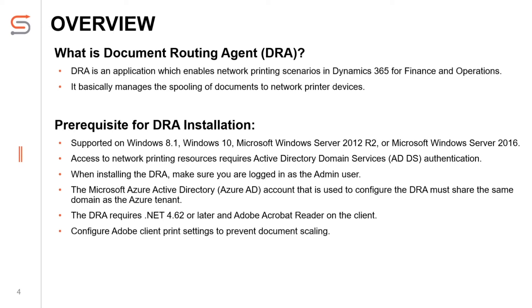In Azure-hosted Dynamics 365 for Finance and Operations, we will use the DRA to manage the spooling of documents to the network printer devices. DRA can be run as an application or in the background as a Windows service. Prerequisites for DRA installation include: operating system Windows 8.1, Windows 10 or above, or Microsoft Windows Server 2012 R2 or Windows Server 2016. Active Directory domain service authentication is required to access network printing resources. Make sure you are logged in as admin while installing DRA. Azure AD account must share the same domain as the Azure tenant while configuring DRA. Additionally, .NET 4.62 or later, Adobe Acrobat Reader, and Adobe Client print settings are required on the client.